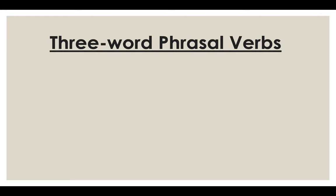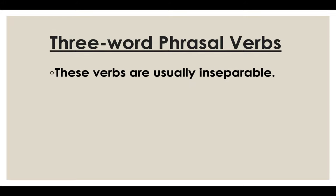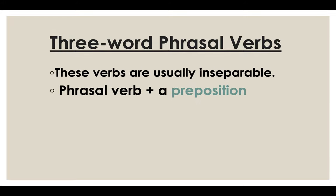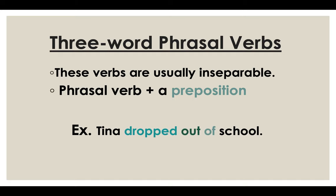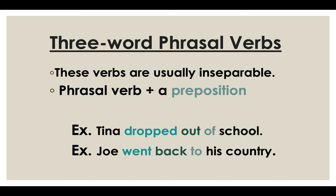Three-word phrasal verbs — these verbs are usually inseparable. It's a phrasal verb plus a preposition. Let's take a look: Tina dropped out of school — drop out is the phrasal verb and of is the preposition. Or: Joe went back to his country — go back is the phrasal verb and to is the preposition.